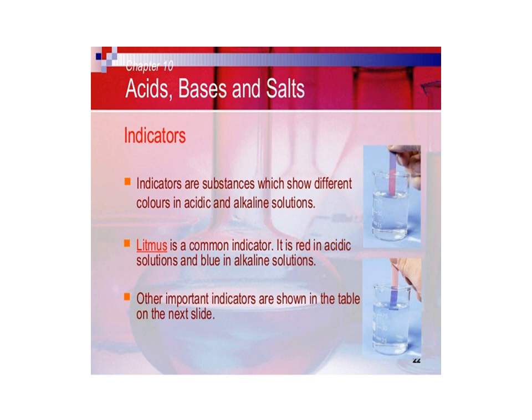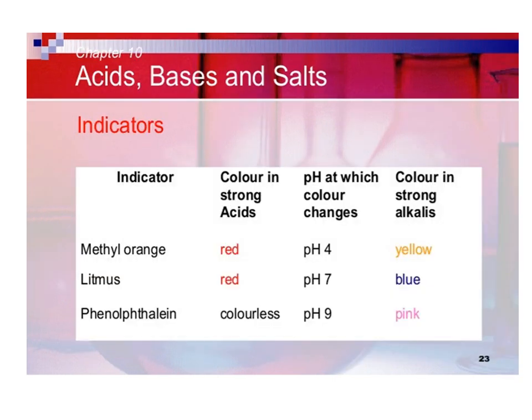There are some other important indicators. Methyl orange turns red in strong acids and yellow in base. Litmus paper turns red in acid and blue in base. Phenolphthalein remains colorless in acids and turns pink in alkalies.